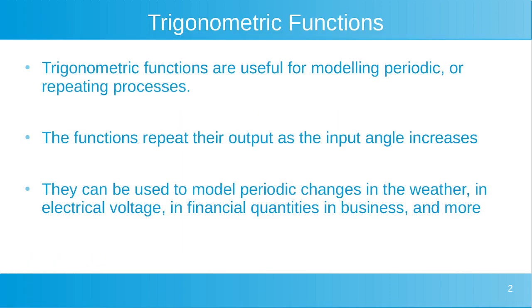Trigonometric functions are useful for modeling periodic or repeating processes. The functions repeat their output as the input angle increases, and this property makes them really useful for modeling variables that are changing periodically. They can be used to model periodic changes in the weather, or electrical voltage, or a financial quantity in business, or some other variable that's changing periodically.